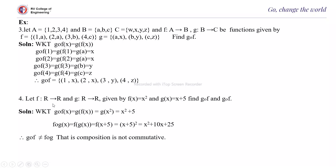Next problem: let F and G be functions from R to R given by F(x) = x² and G(x) = x + 5. Find Gof and Fog. Gof(x) = G(F(x)) = G(x²) = x² + 5. Fog(x) = F(G(x)) = F(x+5) = (x+5)². Therefore Gof is not equal to Fog, and this composition is not commutative.